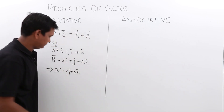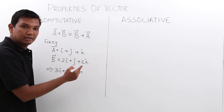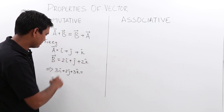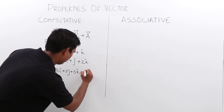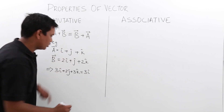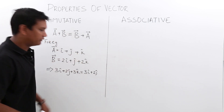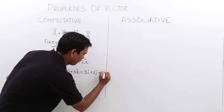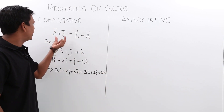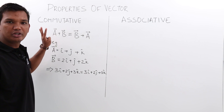Let us calculate the RHS part, which should be equal. It is nothing but B plus A. So 2 plus 1 which comes out to be 3i, 1 plus 1 which comes out to be 2j, and 2 plus 1 which comes out to be 3k. You can see that LHS is equal to RHS. So we have proved A plus B vector is equal to B plus A vector. This is all about commutative properties.